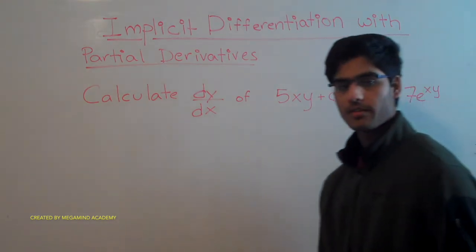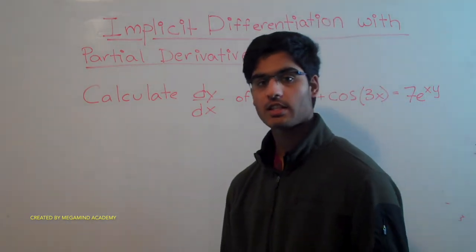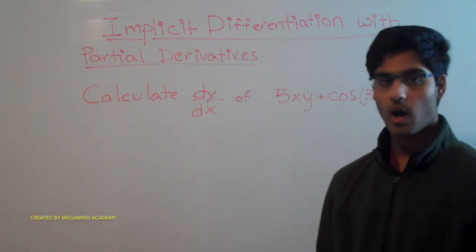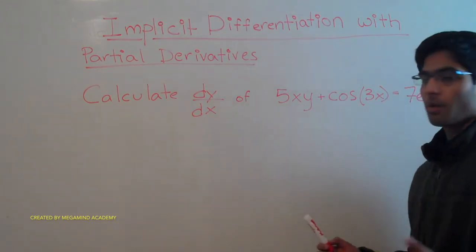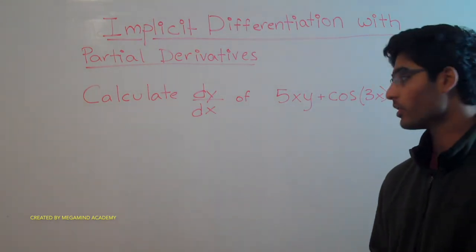With the normal way of implicit differentiation that we learned in Calc 1, this would require a lot of algebra after we do the calculus. But now that we know partial derivatives, there's a simpler way of doing this.